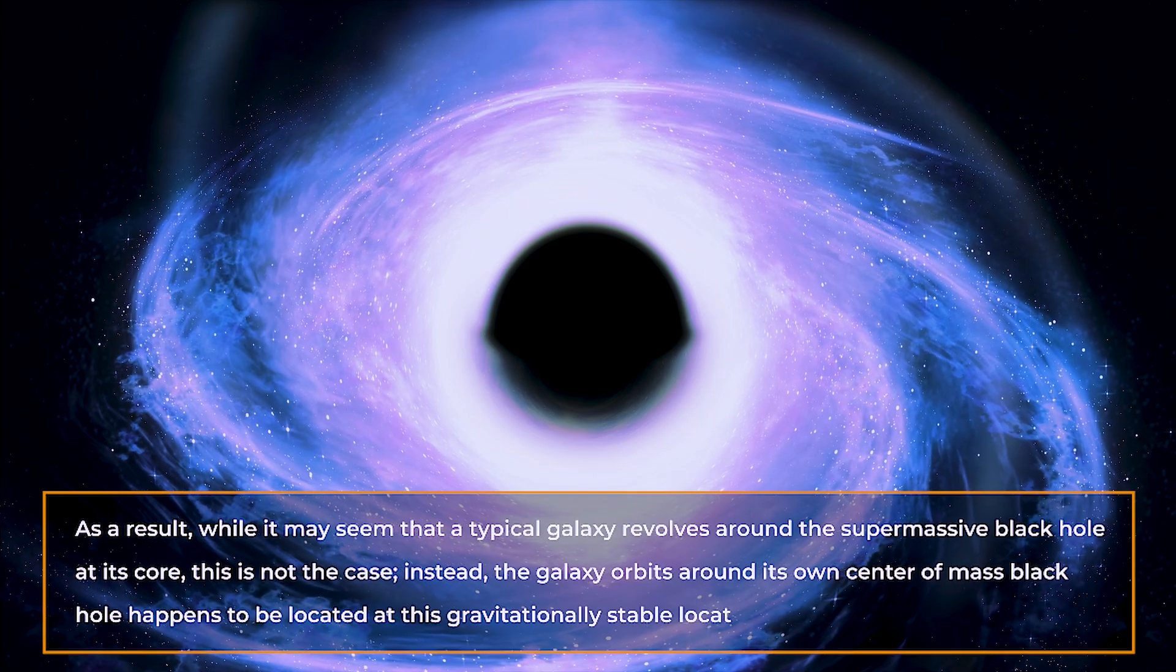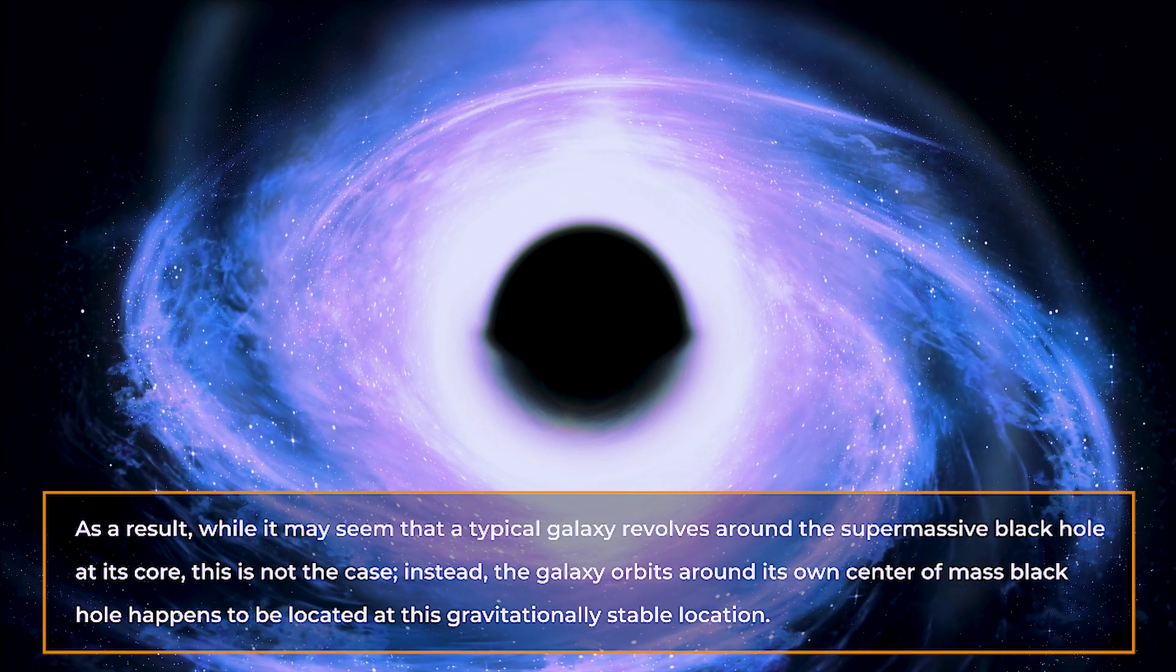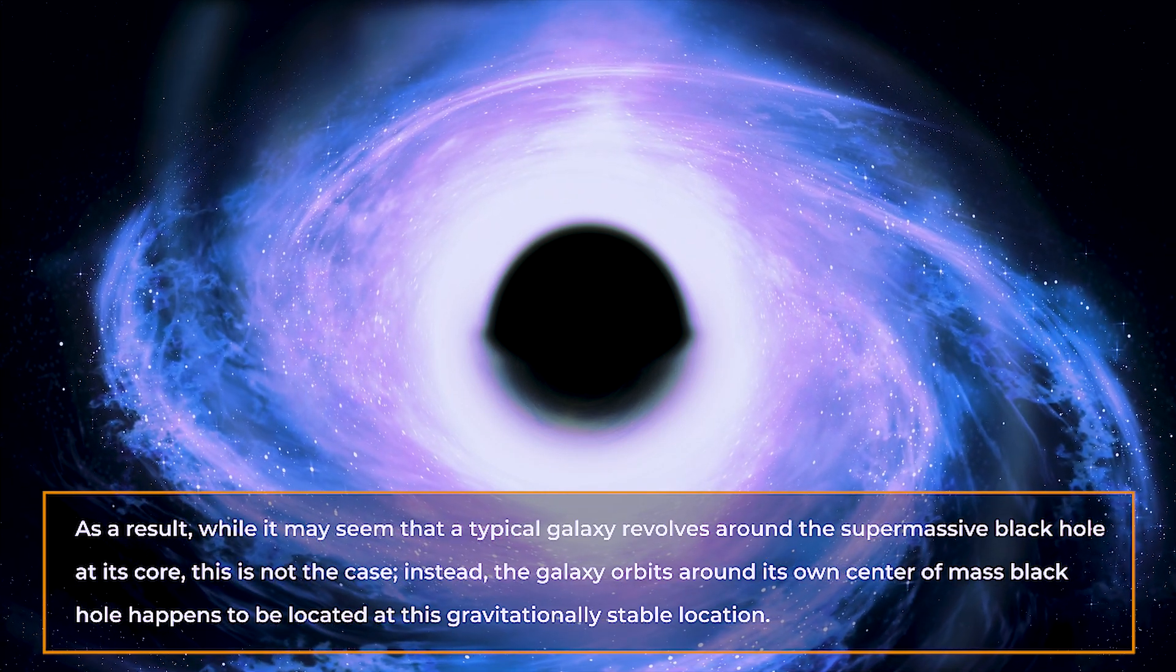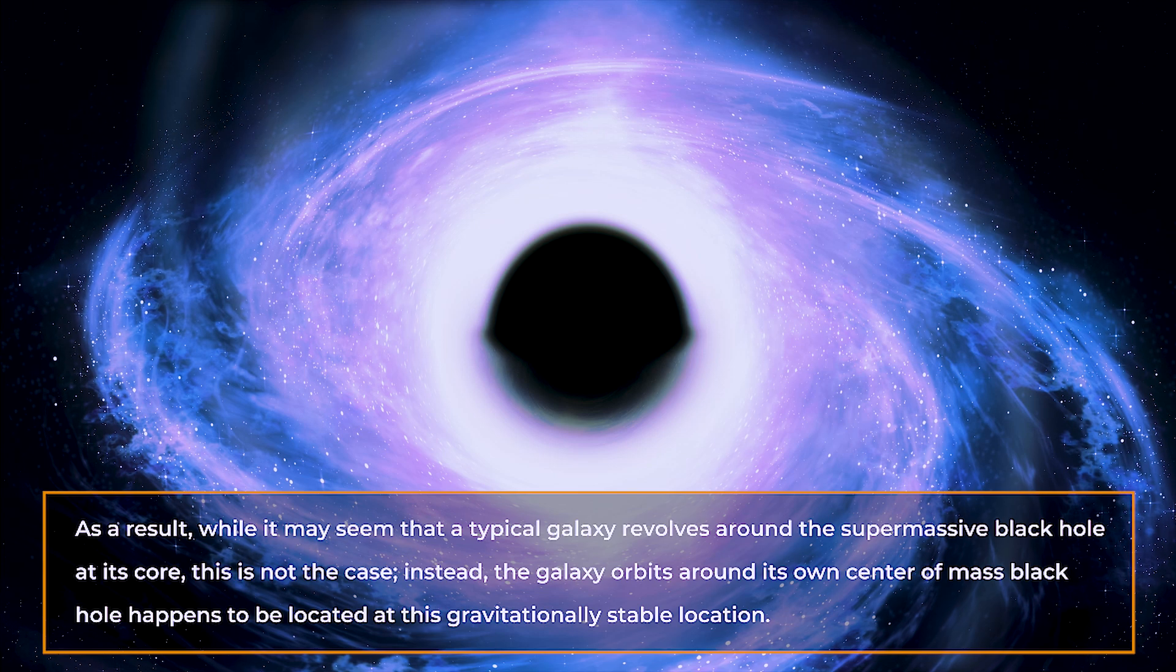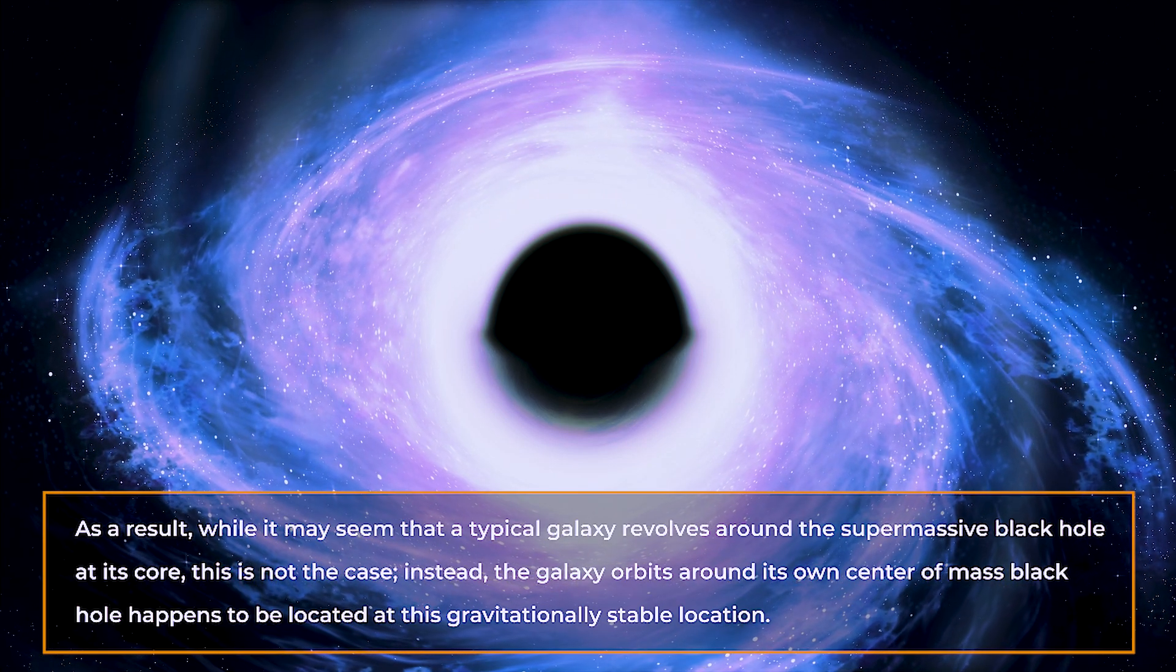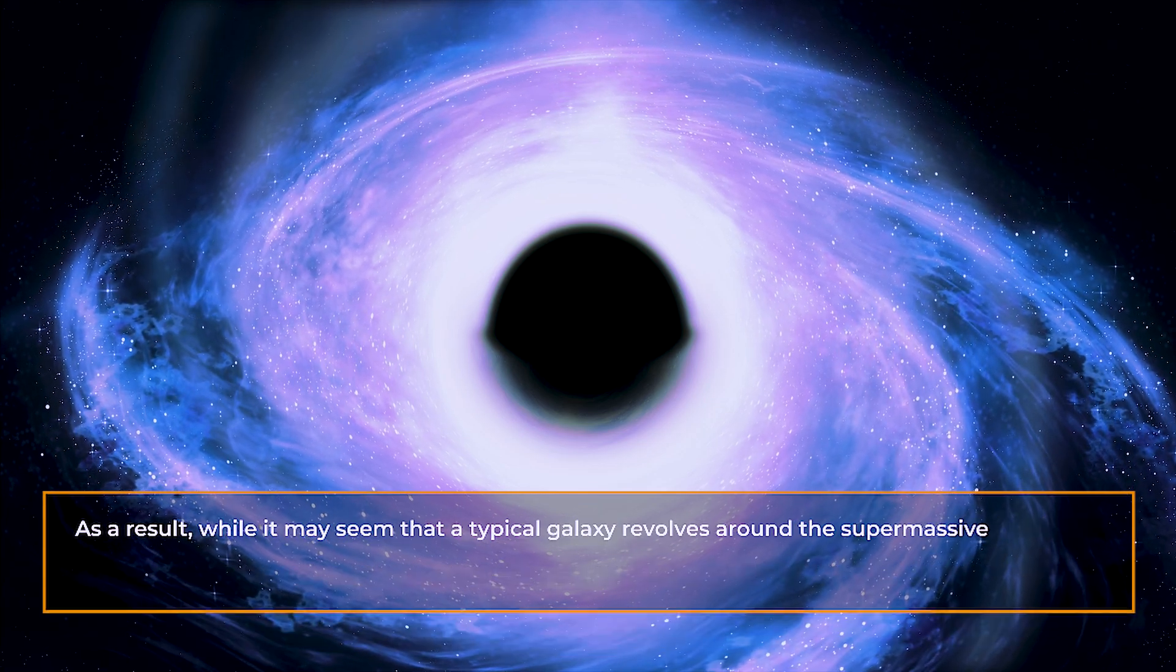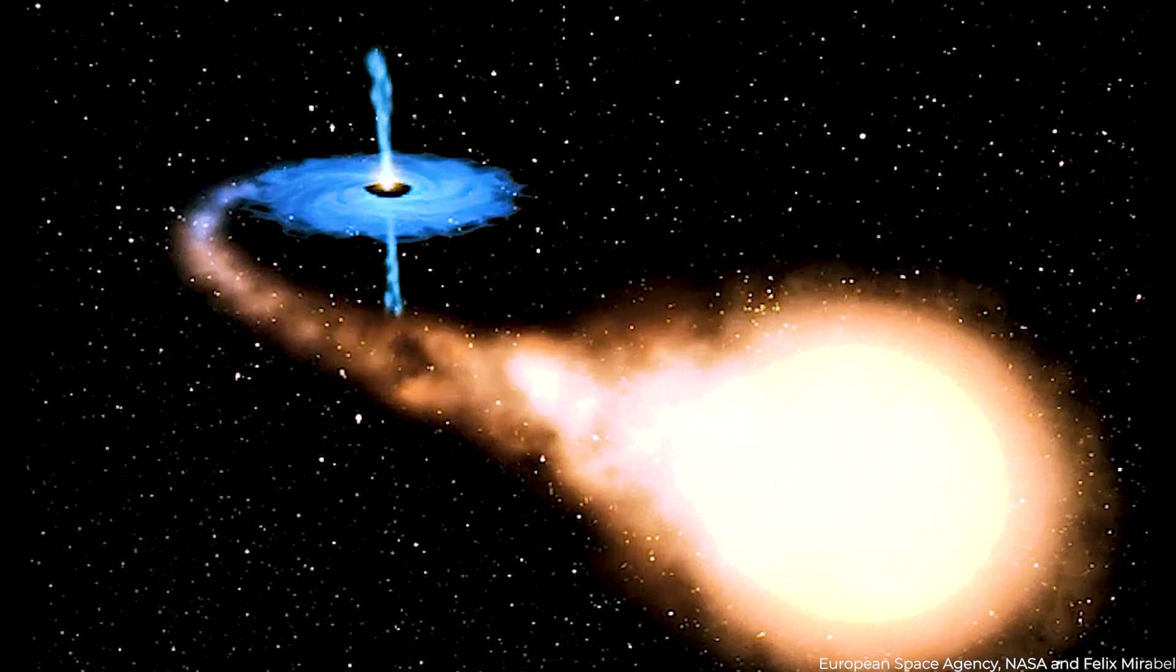As a result, while it may seem that a typical galaxy revolves around the supermassive black hole at its core, this is not the case. Instead, the galaxy orbits around its own center of mass, and the black hole happens to be located at this gravitationally stable location.